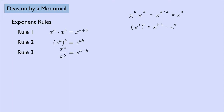Rule three: x to the a power divided by x to the b power is x to the a minus b power. For example, x to the fifth divided by x to the third is x to the five minus three — you can think of it as top minus bottom — which gives x squared. When using division, this is the rule you'll be using most often, so it's a good one to know.